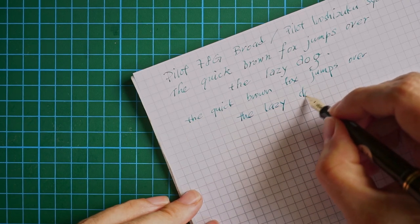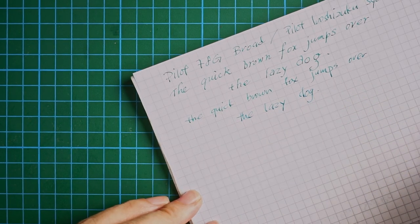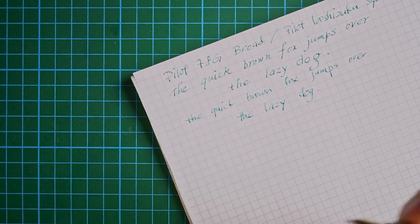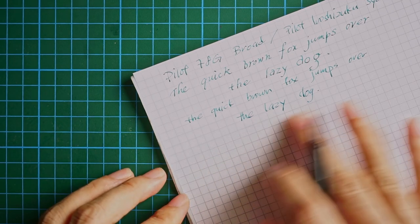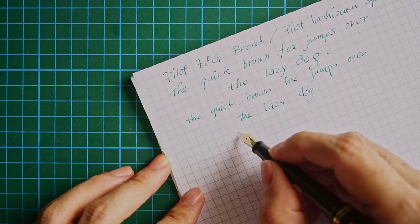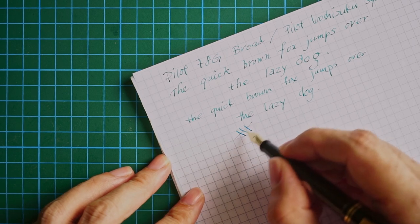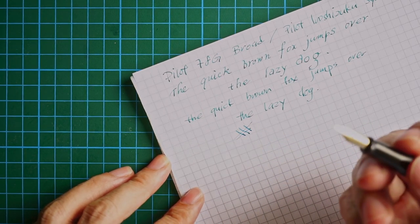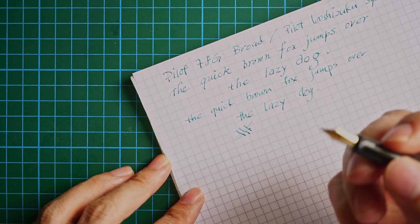When you want to get line variation, it's not just getting a flex pen or a pen that can flex—you can actually get this type of line variation with an italic nib or kind of a semi-stub nib.